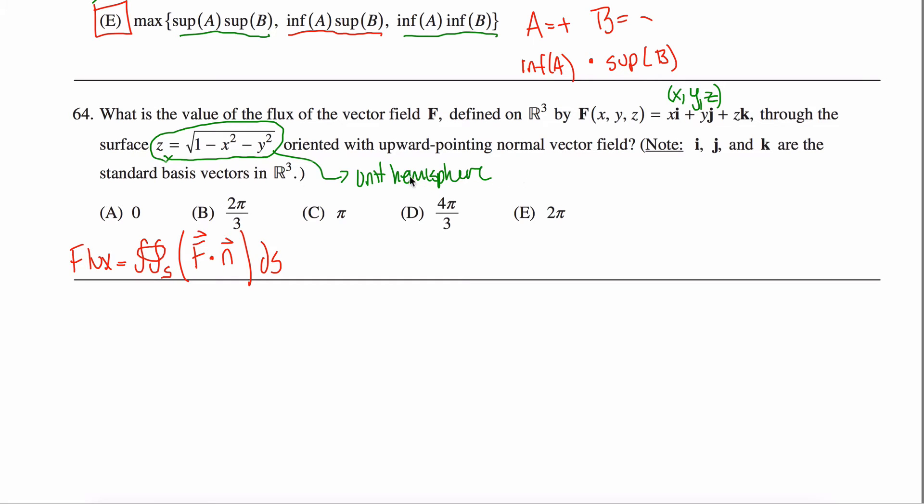An important fact about a unit hemisphere—I'll get there—about its normal vector. What you need to know is that the flux is given by this integral here. So you integrate over the surface in question of the dot product of the vector field and a normal unit vector.